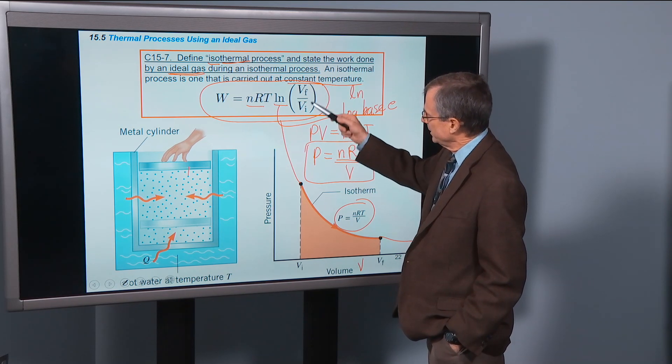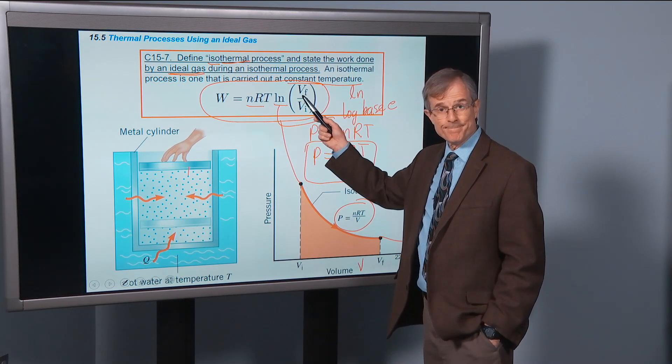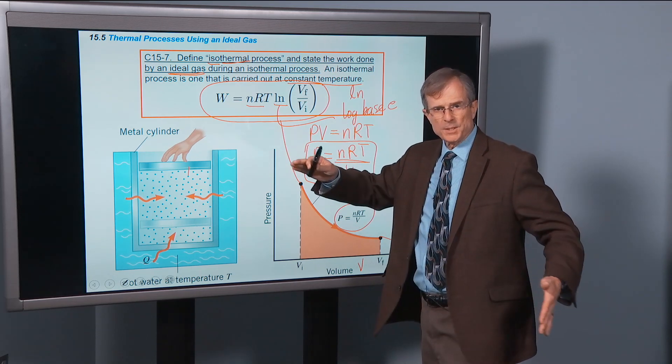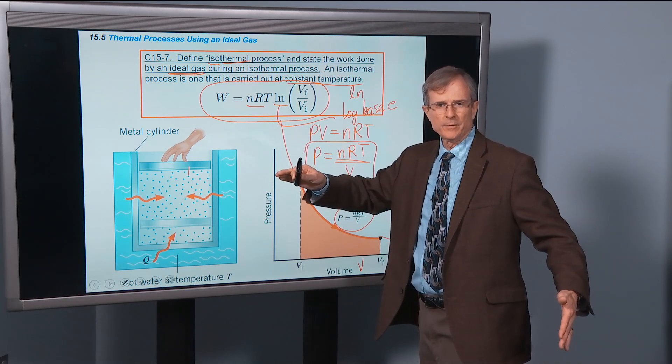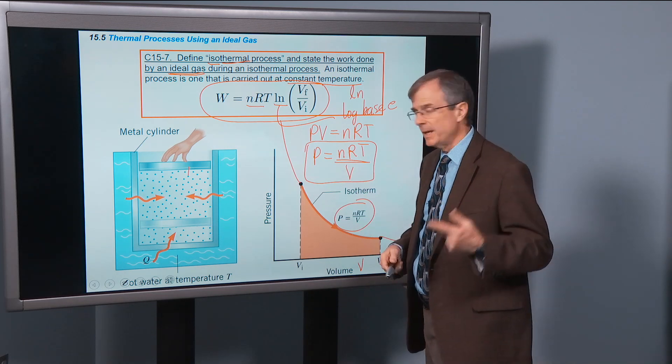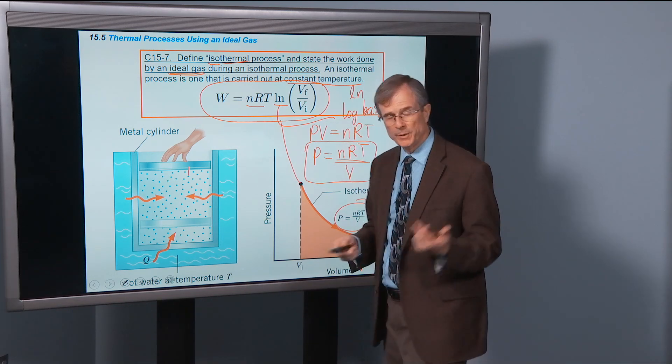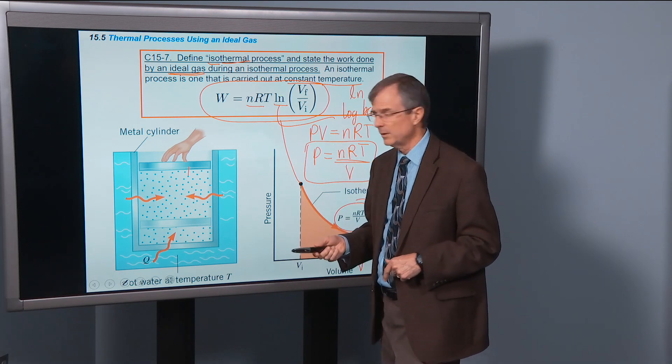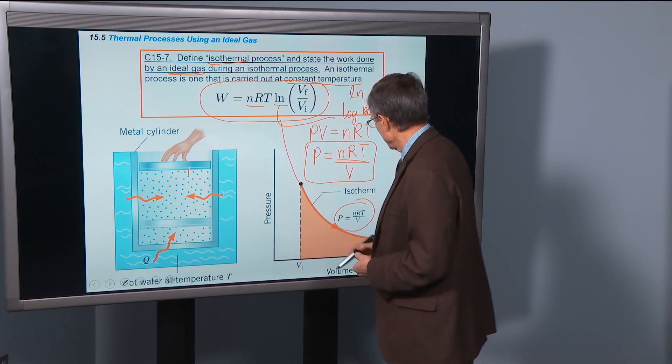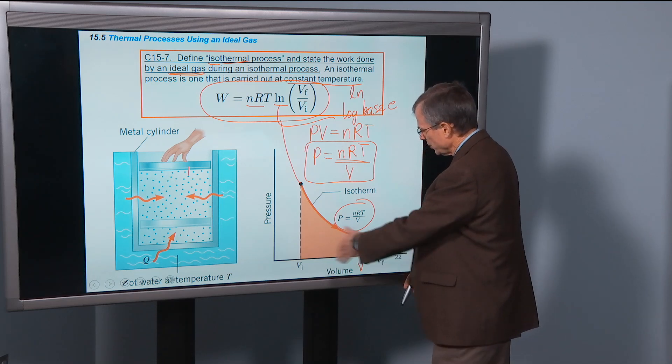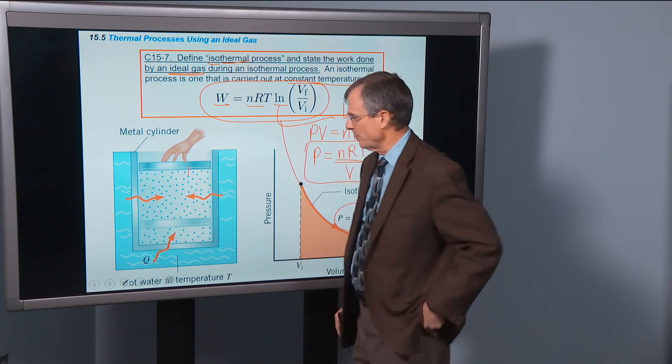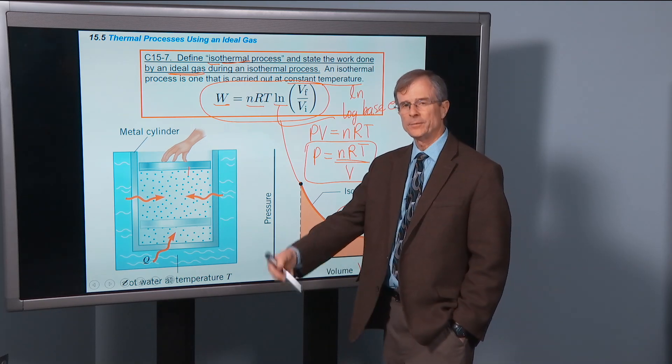So if Vf is greater than Vi, meaning it's an expansion, the final volume is greater than the initial volume, then Vf over Vi will be greater than 1, and log of something that's greater than 1 is greater than 0. And so for an expansion, for an isothermal expansion, we'll get a positive amount of work done by the system.